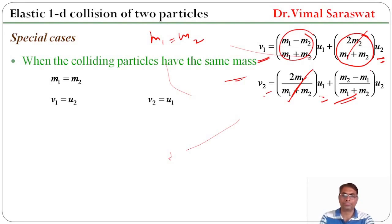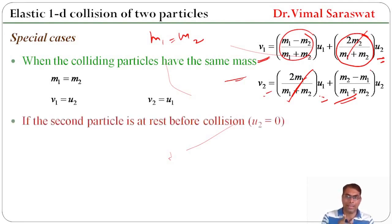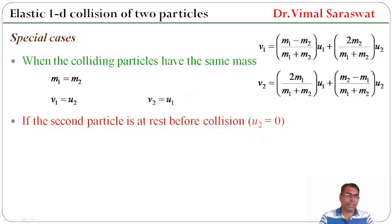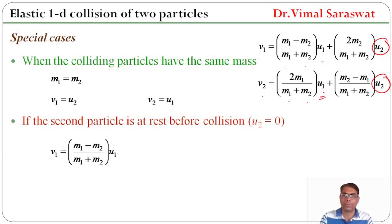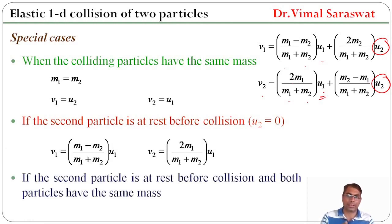Special case 2: if the second particle is at rest before collision, so U2 = 0. Substituting U2 = 0 gives V1 = (M1 − M2)·U1 / (M1 + M2) and V2 = 2M1·U1 / (M1 + M2).